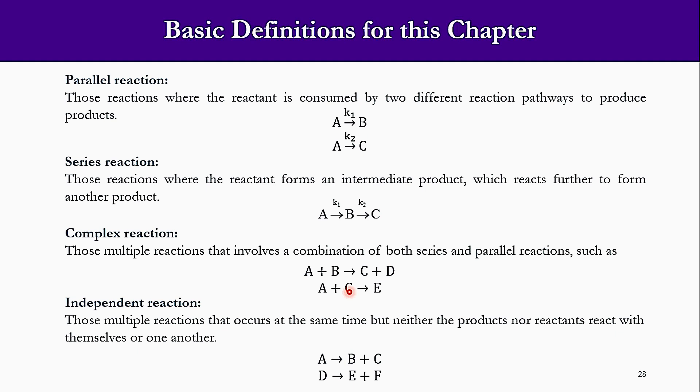Then the independent reactions - no connection with each other. Multiple reactions are occurring, but there is no connection between each other. Like you can say that A produces B and C, and another species D which produces another species E and F. The multiple reactions which occur at the same time, but neither the products nor reactants react with themselves or one another. These are the four different types of reactions which are included in the system.